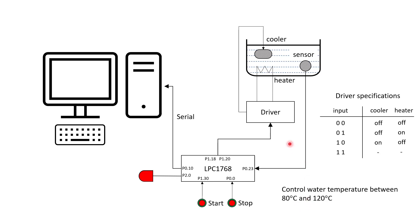If the temperature is within the 80–120°C range, we will turn off both the heater and the cooler. The control logic uses two pins: P1.18 and P1.20. When the input is 0,0 both heater and cooler are off; 0,1 turns on the heater; 1,0 turns on the cooler. The temperature sensor is connected to P0.23.